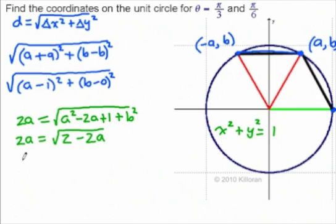To get rid of the square root, we square both sides, so this becomes four a squared equals two minus two a. This is a quadratic, so we'll get it equal to zero, so we have four a squared plus two a minus two is equal to zero.